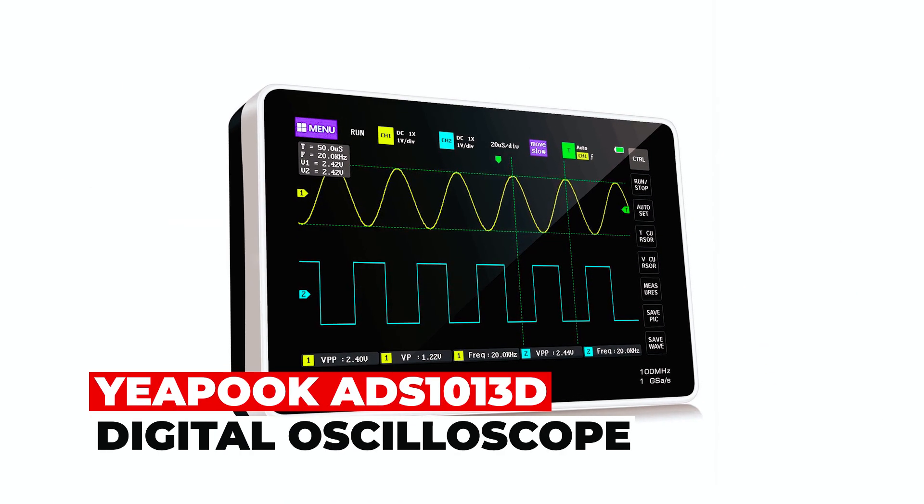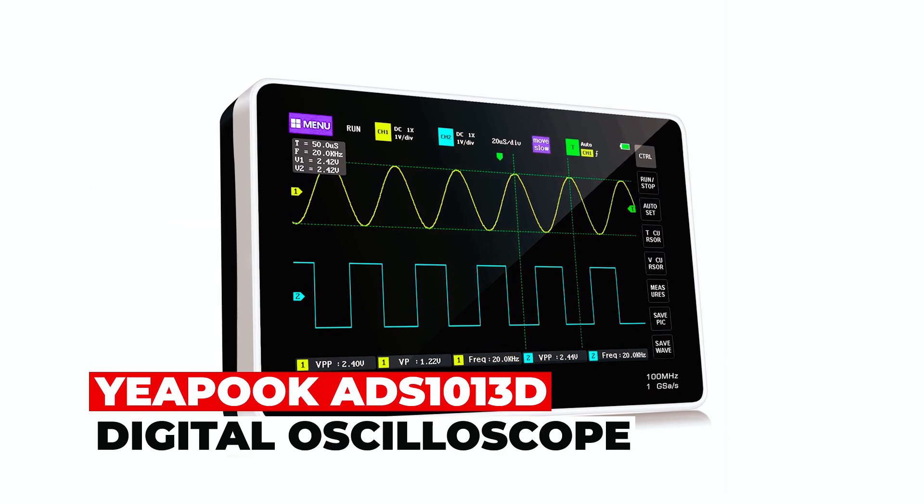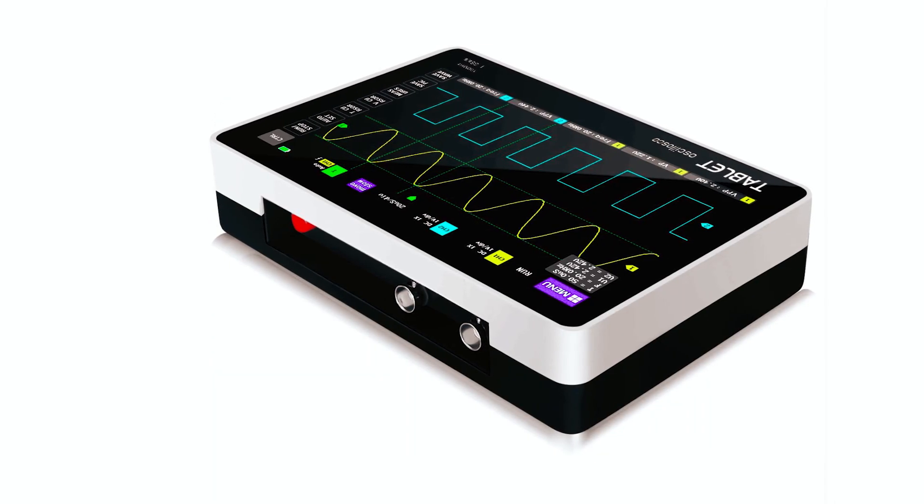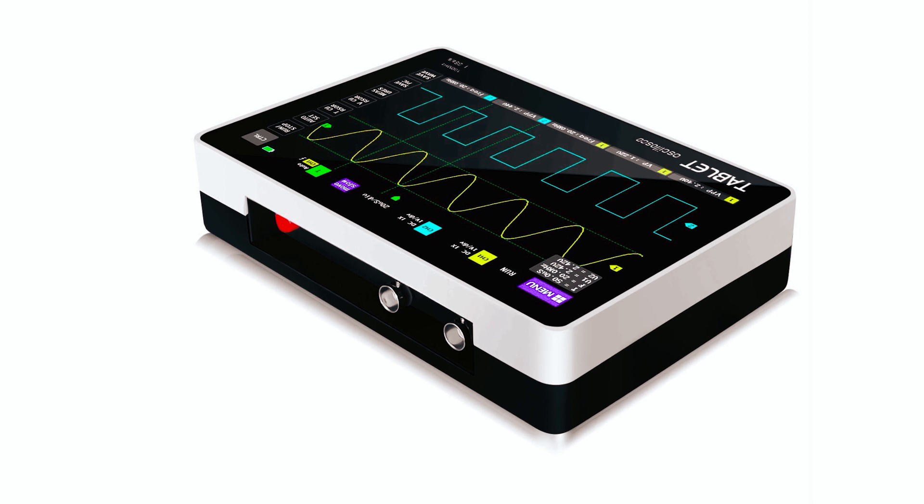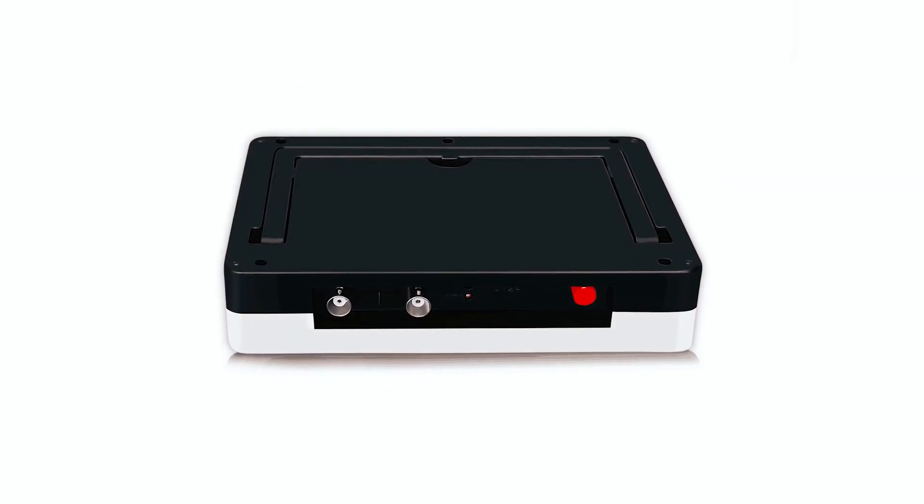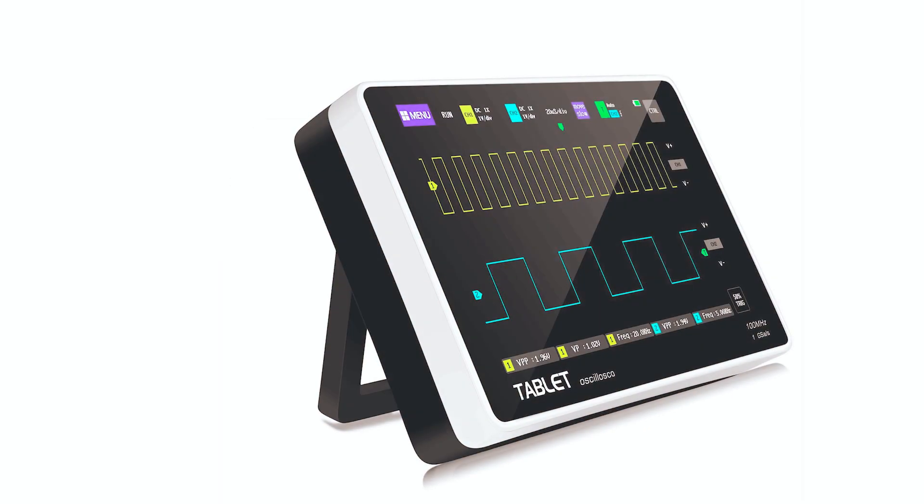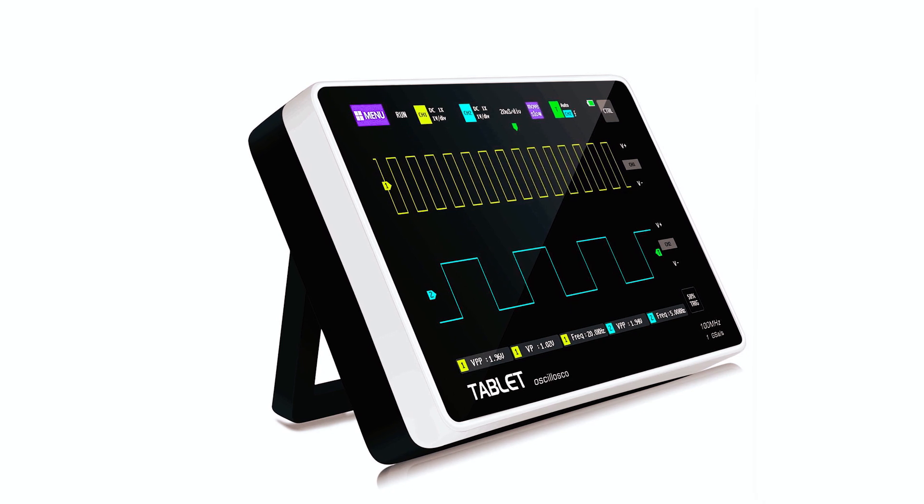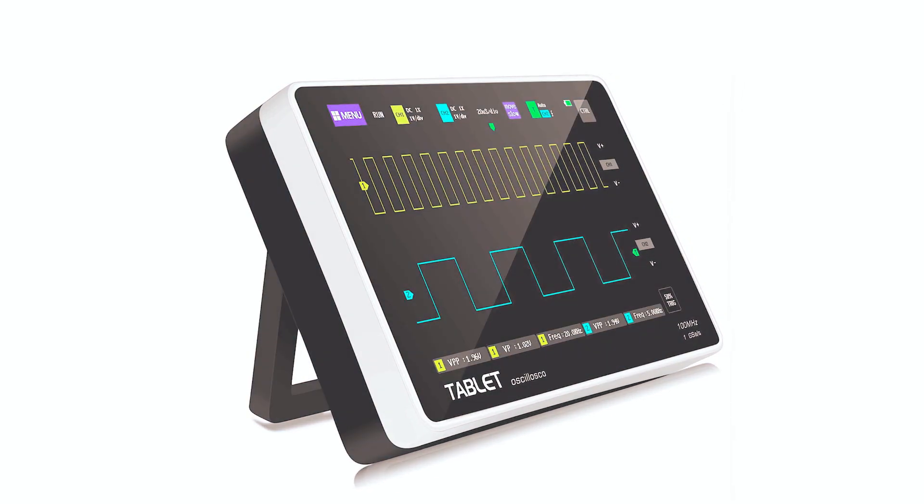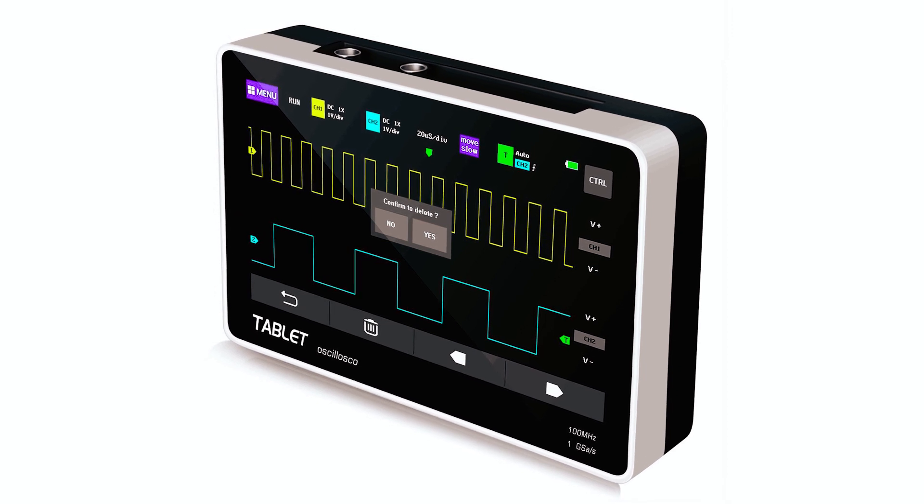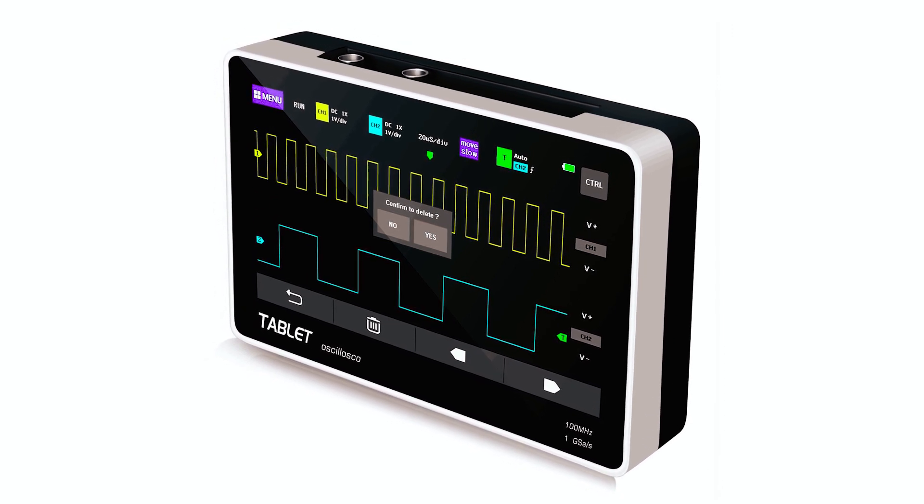Yupuk ADS-1013D Digital Oscilloscope. The Yupuk ADS-1013D Digital Oscilloscope is a professional-grade tool designed for electronic product design, debugging, maintenance, and electronic engineering education. This two-channel oscilloscope, with a 100 MHz analog bandwidth and 1 GSa/s sampling rate, captures detailed waveforms for accurate analysis on its high-definition 7-inch touchscreen.